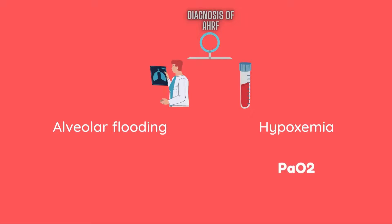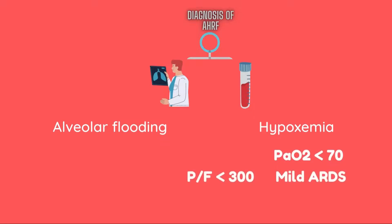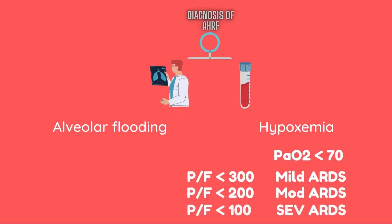A PaO2 level below 70 at room air, or a P/F ratio of less than 300 (mild ARDS), below 200 (moderate ARDS), or less than 100 (severe ARDS) is considered acute hypoxemic respiratory failure (AHRF).